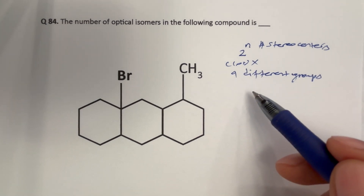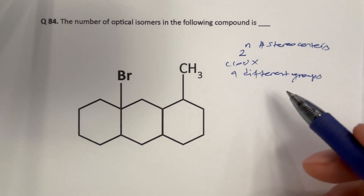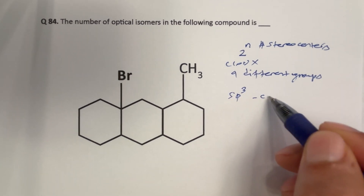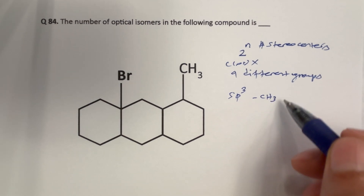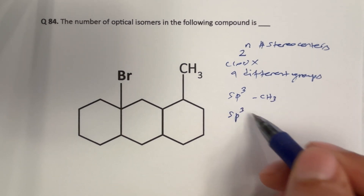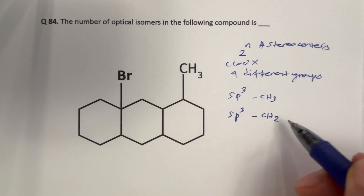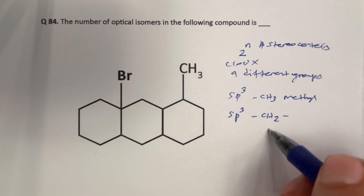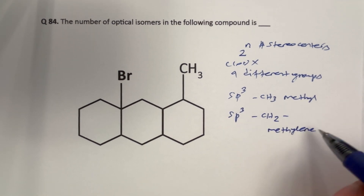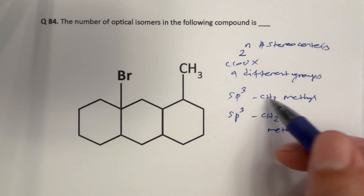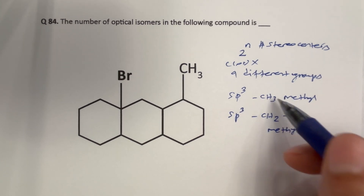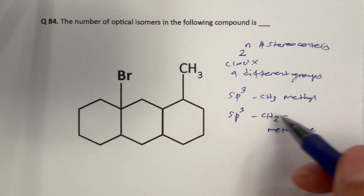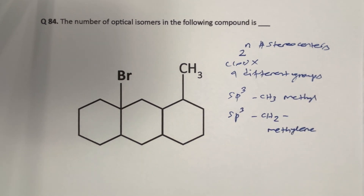Instead of figuring out the chiral carbons, let us eliminate those that are not chiral carbons. We can eliminate the sp3 carbons that are methyl groups, and we can also eliminate the sp3 carbons that are methylene groups. Both methyl as well as methylene groups we can eliminate, because methyl has three hydrogens giving only two different groups, and methylene has two hydrogens giving only three different groups.